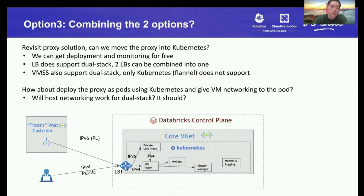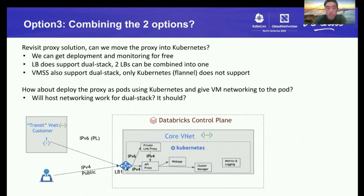The virtual machine scale set also supports dual stack. Actually, only the Flannel CNI network on Kubernetes is not supporting dual stack. So, is it possible to deploy the proxy as pods on Kubernetes but give those pods the virtual machine level networking? There is a feature called use-host-network where it will work for dual stack. That was the third option we explored. We didn't know whether it would work, but we prototyped it and luckily it works pretty well.